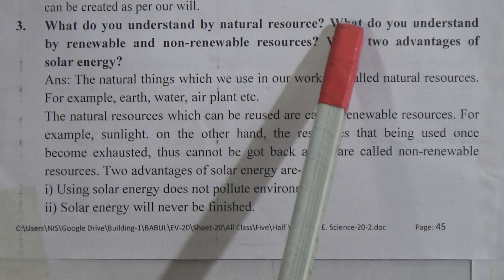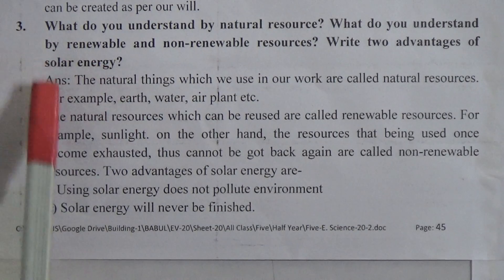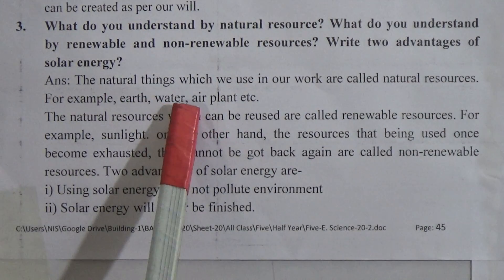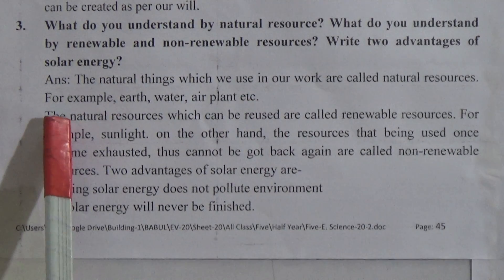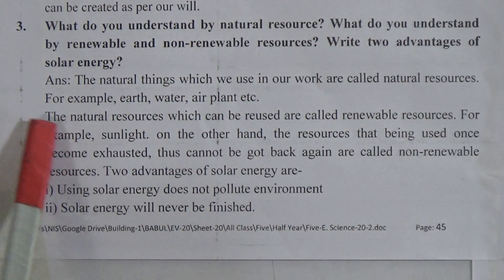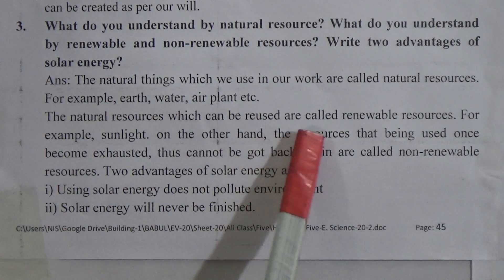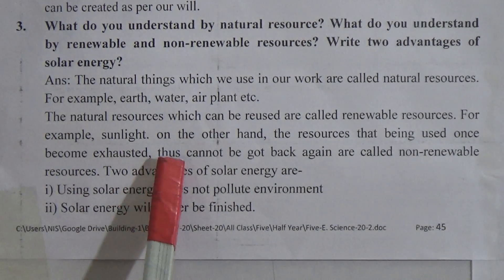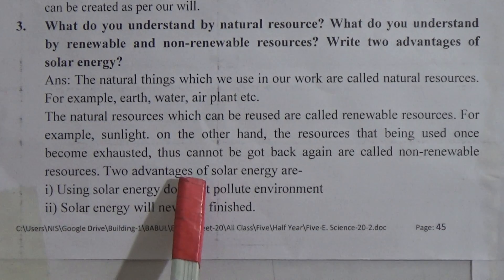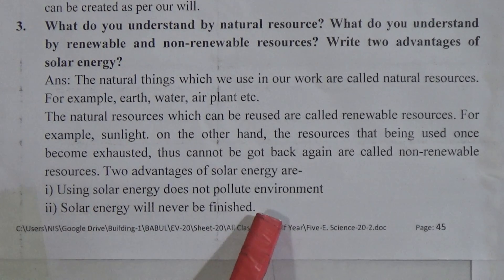Question three: what do you understand by natural resources? What do you understand by renewable and non-renewable resources? Write two advantages of solar energy. Answer: the natural things which we use in our work are called natural resources — for example, earth, water, air, plants. Natural resources which can be reused are called renewable resources, for example sunlight. Resources that once used cannot be recovered are called non-renewable resources. Two advantages of solar energy: first, using solar energy does not pollute the environment; second, solar energy will never be finished.